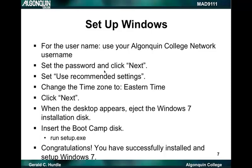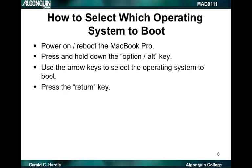Congratulations — you should have successfully completed and set up Windows 7. Now, how do you select which operating system to boot? Assume that we're powering on or rebooting our MacBook Pro. During the reboot or power-on sequence, you'll hold down the Option key — on my keyboard, Option and Alt appear in the upper left-hand corner of the key. A menu will appear showing all of the operating systems on the hard disk. In mine, it shows three: OS X, Windows 7, and the OS X recovery. Press the Return key after making your selection and it will boot into that operating system.